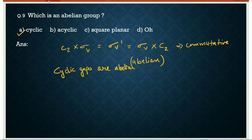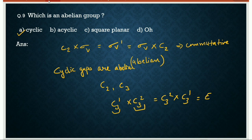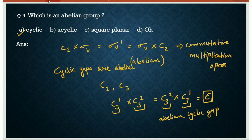All cyclic groups are abelian. In a cyclic group, all elements are produced from a single element by taking its powers. For example, in C3: C3^1·C3^2 = C3^2·C3^1 = identity operation, which is commutative. So the right answer is cyclic group. All cyclic groups are abelian because the multiplication operator is commutative.